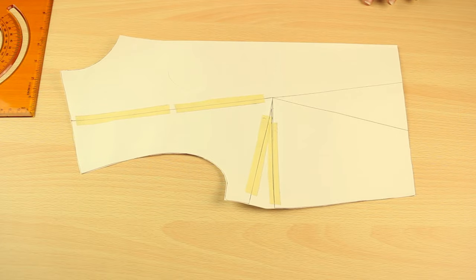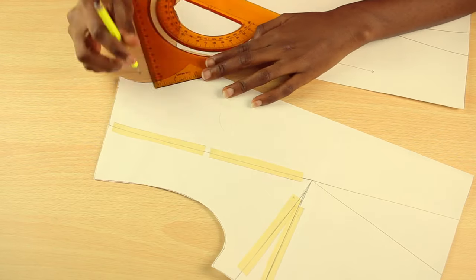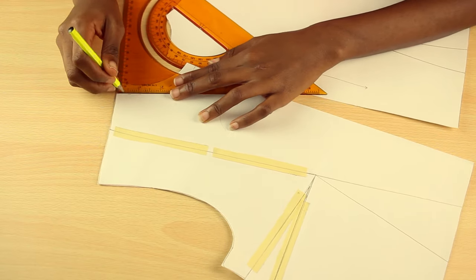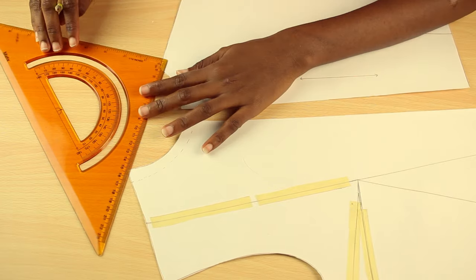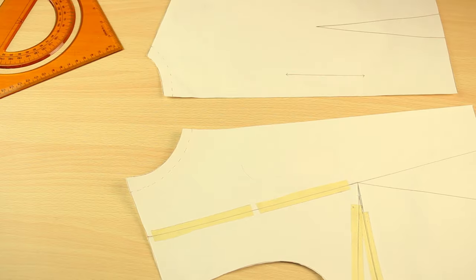Okay, new bodice, new darts. So what I'm doing here is to just expand the neck a little bit. I believe I measured 1.5 cm to the side and then 1 cm down.